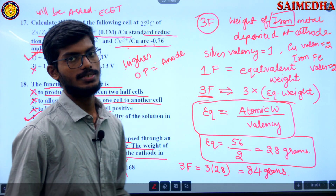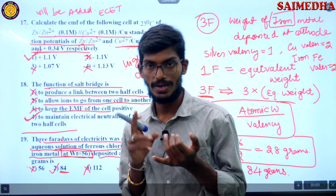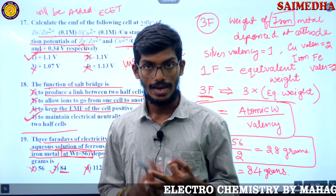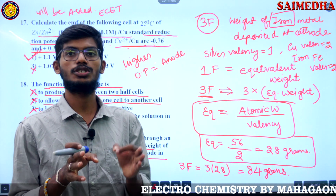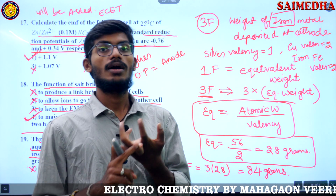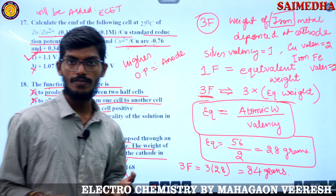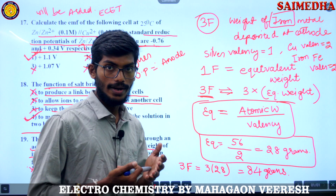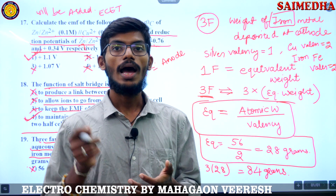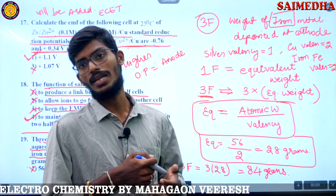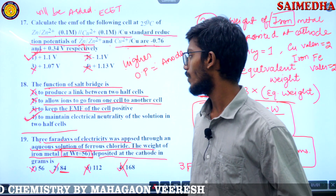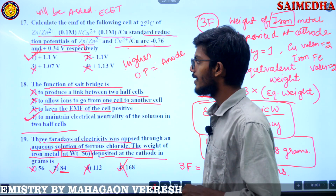So to summarize: the EMF formula and the calculation of weight deposited are very important. Remember electrochemical cell concepts, electrical conduction, ions moving between half cells, electrolytic vs electronic conduction, why KCl is used in the salt bridge, and its necessity — all very important in the chapter of electrochemistry.